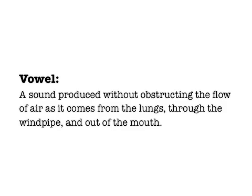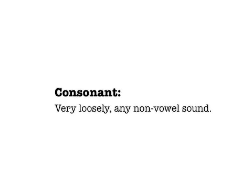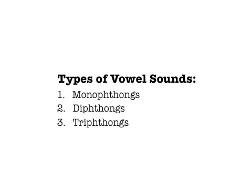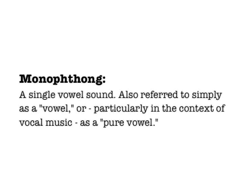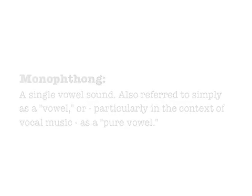A consonant is any sound that's not a vowel. In English, any sound spelled with A, E, I, O, or U will pretty much always be a vowel. There are three kinds of vowel sounds that the IPA can represent. The first is called monophthongs, which is a fancy word for a single vowel sound. Monophthongs are usually just referred to as vowels or as pure vowels. We actually don't have too many of these in English, but one example would be the E in the word 'yet', which I'm spelling out in the IPA on the screen here. You can see how one IPA symbol stands for the monophthong E.